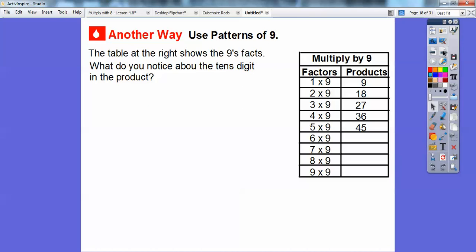But here's another pattern about nines. Patterns of nines. This table at the right shows nines facts. So over here we have one times nine is nine. Two times nine is 18. Three times nine is 27. Four times nine is 36. Five times nine is 45.